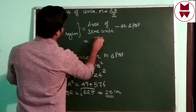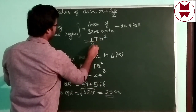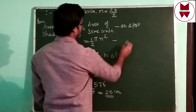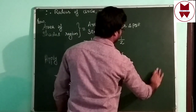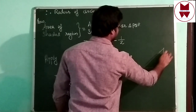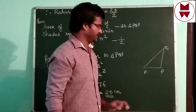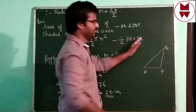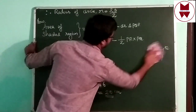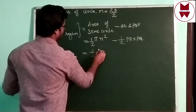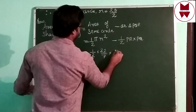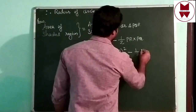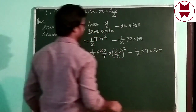Area of semicircle is (1/2)πR². Area of triangle is (1/2) × base × height. Here base is PR and height is PQ. So area of shaded region = (1/2) × (22/7) × (25/2)² minus (1/2) × PR × PQ = (1/2) × (22/7) × (25/2)² − (1/2) × 7 × 24.